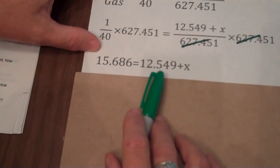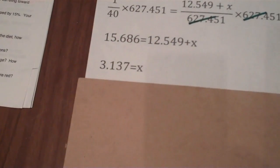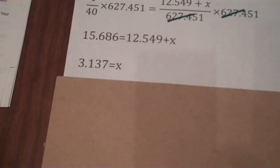Now, at this point I merely subtract the 12.549 from both sides of my equation and that leaves me with 3.137, the number of fluid ounces that I need to add to my gas oil mixture.